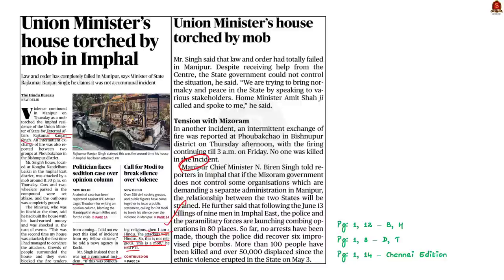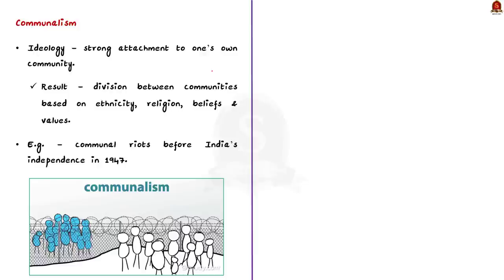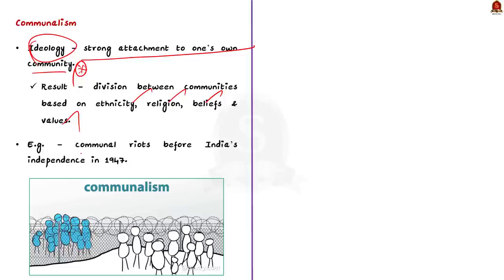In this news article discussion let us understand about communalism, the causes for communalism in India, and some measures to tackle it. The syllabus relevant to this news article is highlighted here. So what is communalism? Communalism is an ideology that refers to strong attachment to one's own community. This results in a division between groups of people or communities based on factors of ethnicity, religion, belief, values, and so on. Simply put, when people of one community or religion go against people of another community or religion, it is termed communalism.